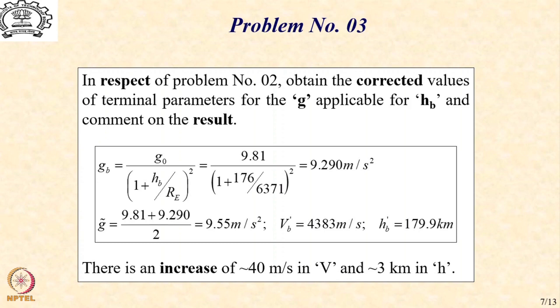What this means is that for most cases of ascent missions ending around 180 to 200 kilometers, even if we do not correct for altitude, the conservative estimate is not very much off. And if we want a more realistic result, a simplified correction based on the average gravitational acceleration is more than adequate.